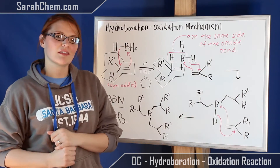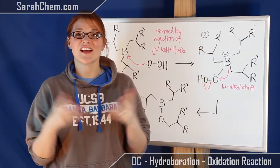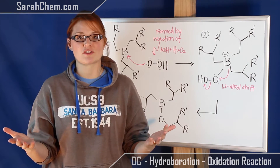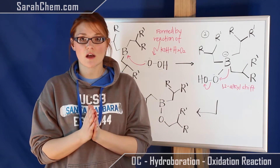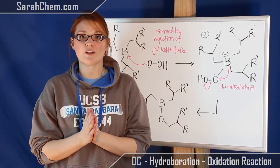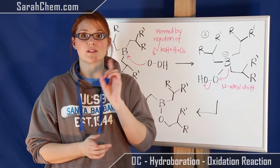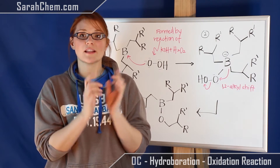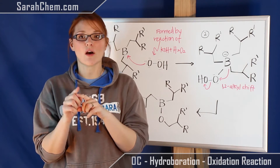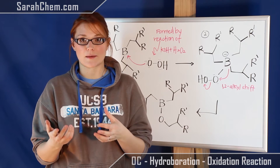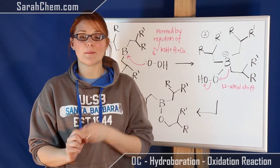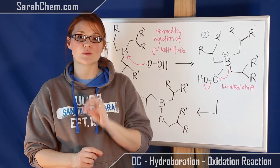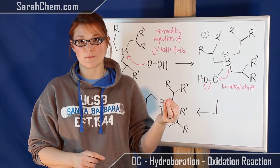So now this is our hydroboration. Let's take a look at the oxidation. What we just saw was step one, hydroboration, where the boron adds on to the alkene. In the oxidation step, that boron is now going to get replaced with an alcohol — an OH group.